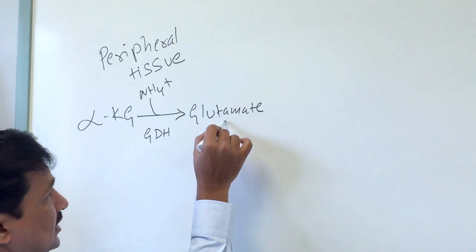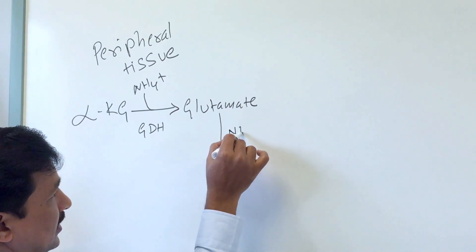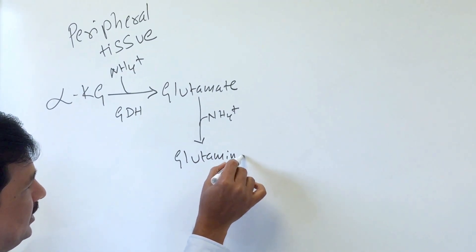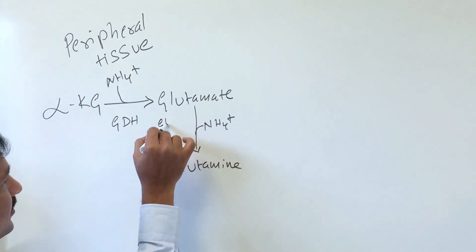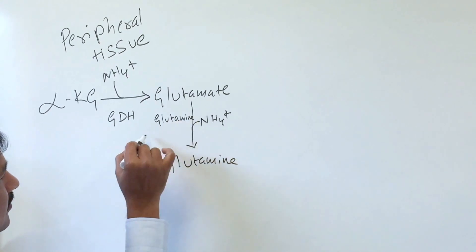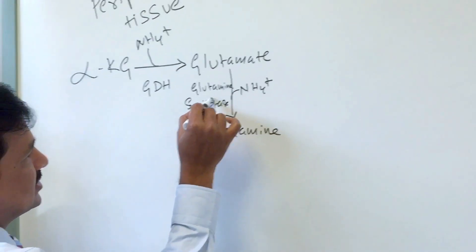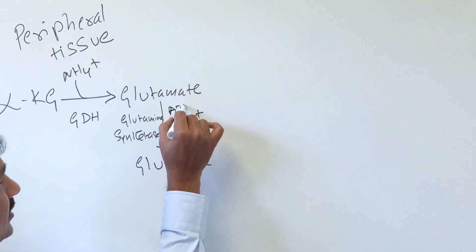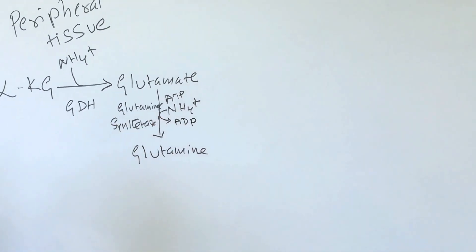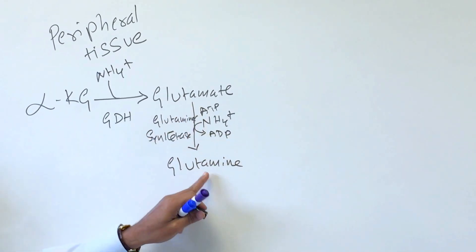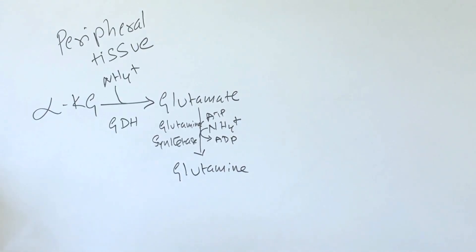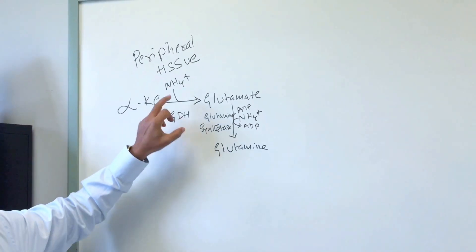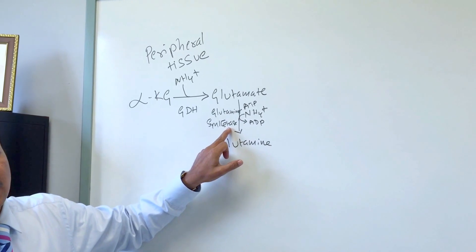Once glutamate is made, it can accept one more ammonium ion (NH4+) and become glutamine. This is done by glutamine synthetase enzyme, which uses ATP — converting ATP to ADP in this reaction. So glutamate dehydrogenase fixes one ammonium ion, and glutamine synthetase fixes another, both acting as ammonium-fixing enzymes.